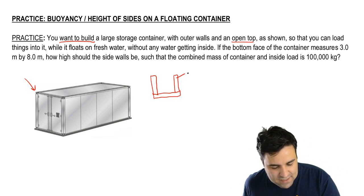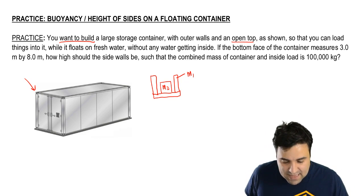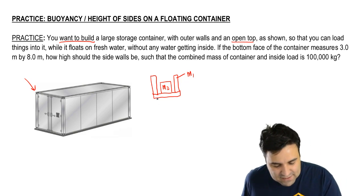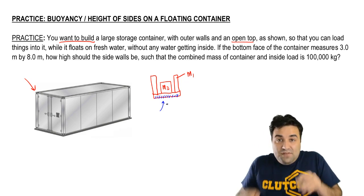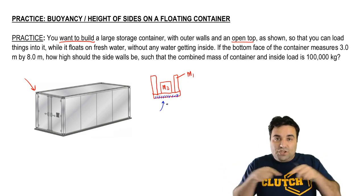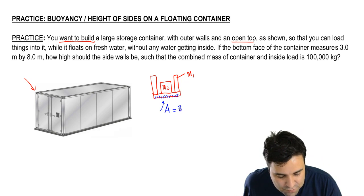Let's say that this entire thing has a mass M1 and you want to be able to add some stuff here, let's call that M2. The bottom face of the container has an area. Obviously the bottom is a two-dimensional measure, right? It has an area that measures three by eight.